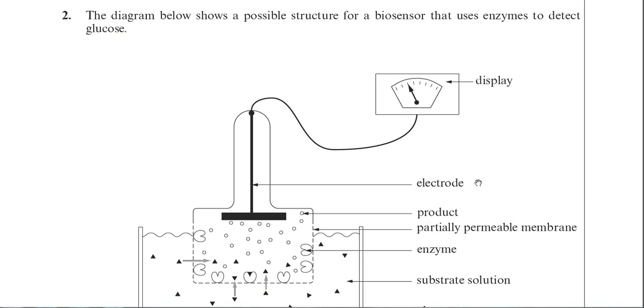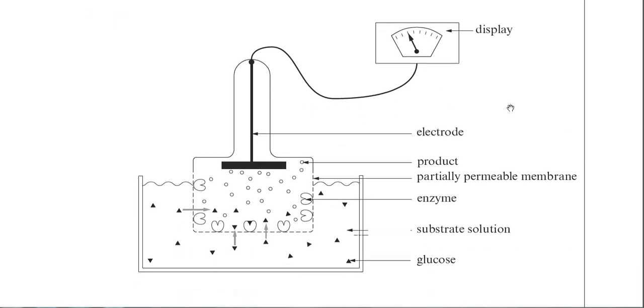This is question number two from the June 2011 BY-1 paper. The question is about biosensors, and we have a diagram here which is another way of representing a biosensor. Throughout these video tutorials on exam questions, we've seen a number of ways that the examiner can represent a biosensor, and this is another such example.